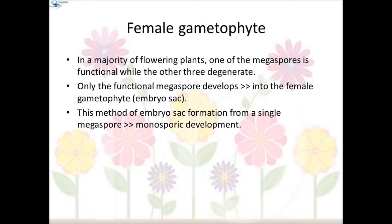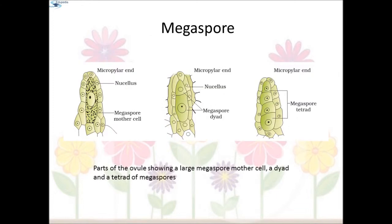Female gametophyte: in a majority of flowering plants, one of the megaspores is functional while the other three degenerate. Only the functional megaspore develops into the female gametophyte, that is the embryo sac. This method of embryo sac formation from a single megaspore is named monosporic development. The diagram shows the part of the ovule with the large megaspore mother cell, then the megaspore dyad, and finally the megaspore tetrad.